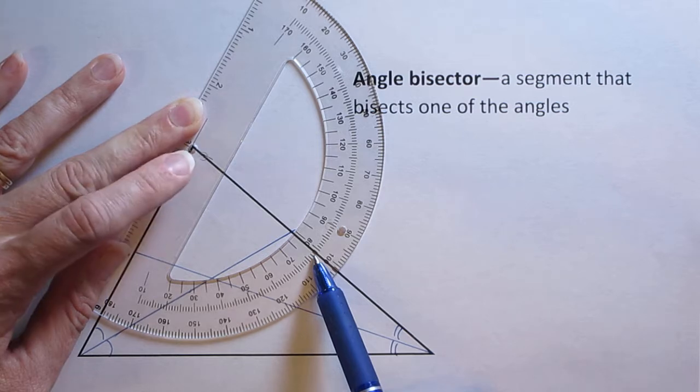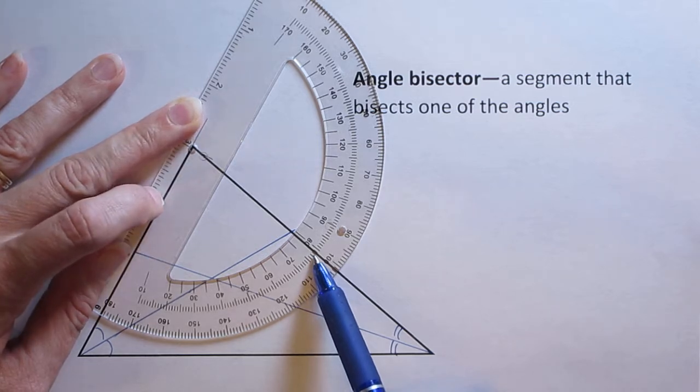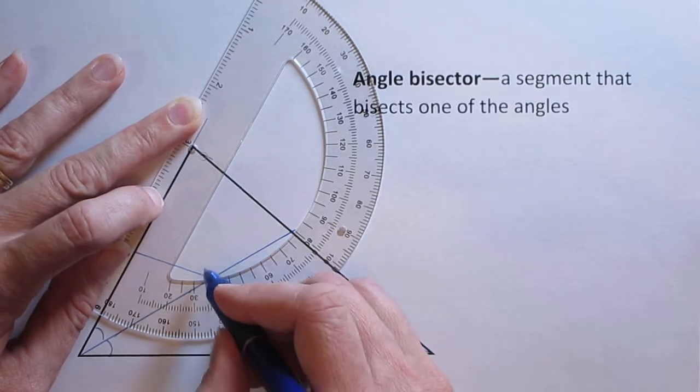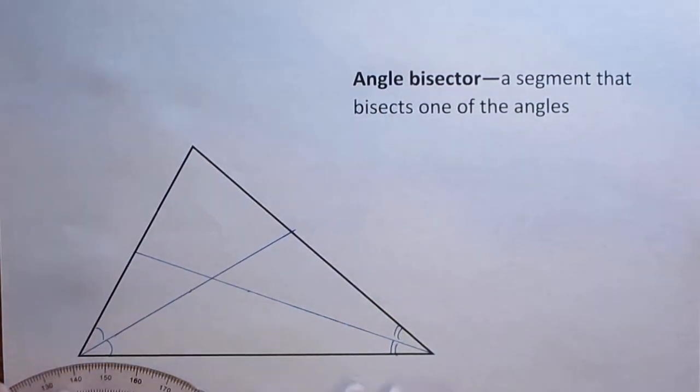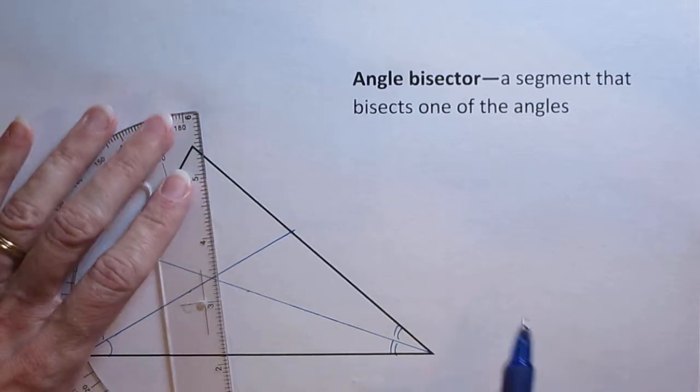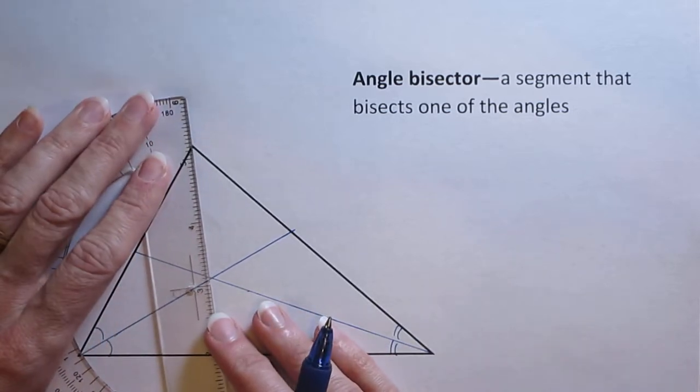78, so half of 78 is going to be 36. I'm going to look for 36 degrees right about there. Take my protractor, I'm going to line that up.